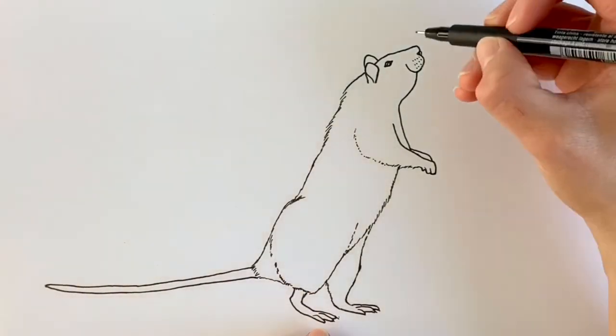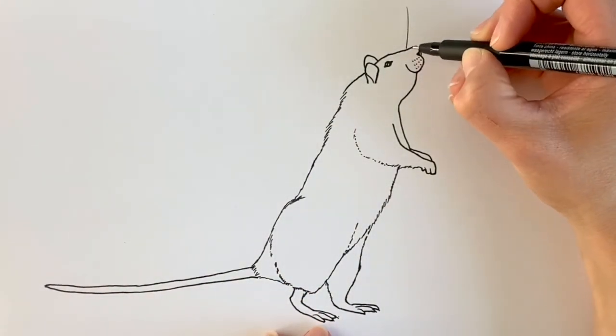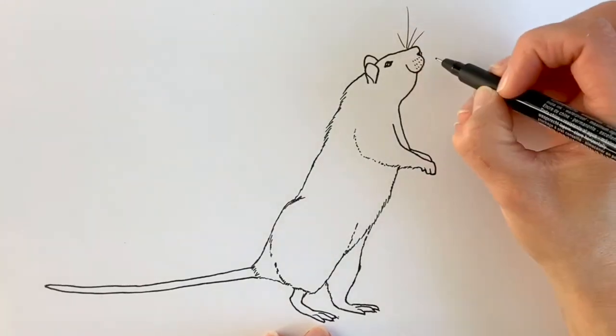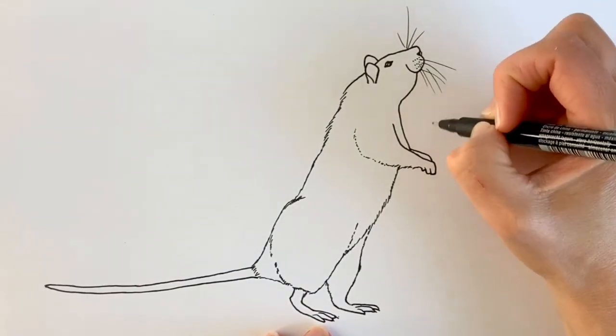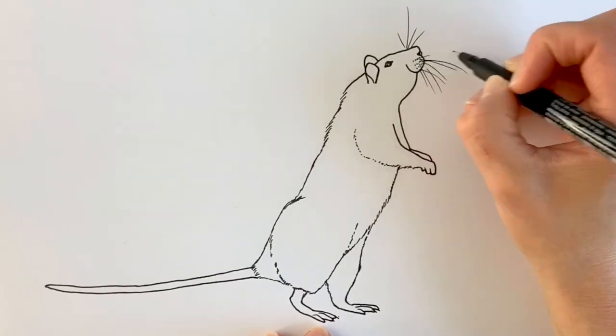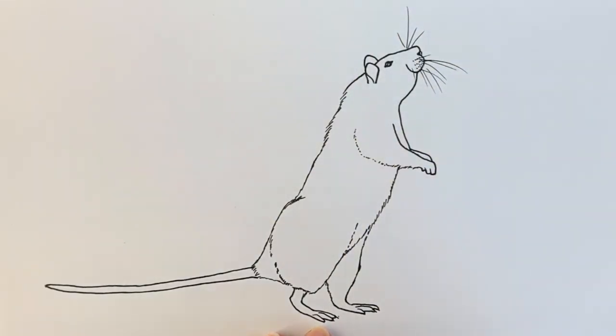I've erased all the pencil lines now. We're going to add some details. How about these whiskers? Just long, wispy lines like this to show the whiskers. They've got loads of whiskers. We're not going to draw all of them, but we're just going to give the impression of lots of whiskers there.